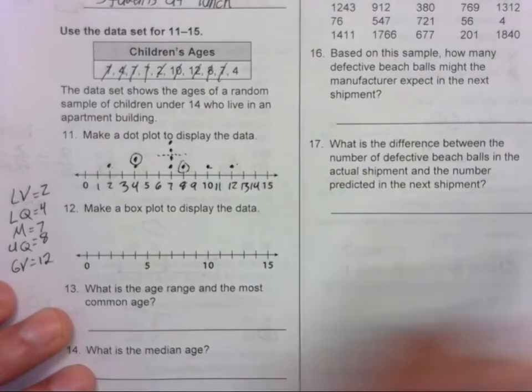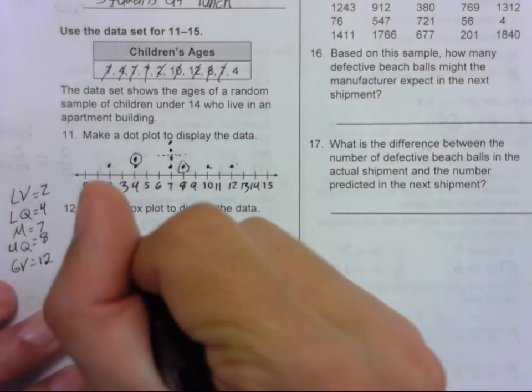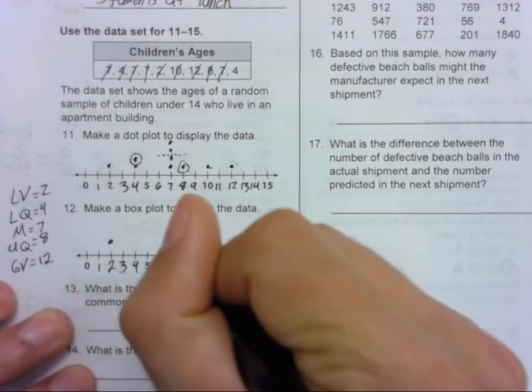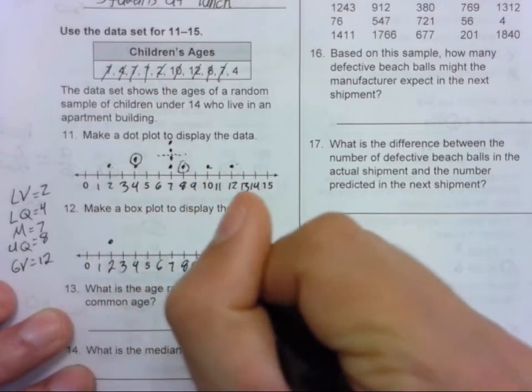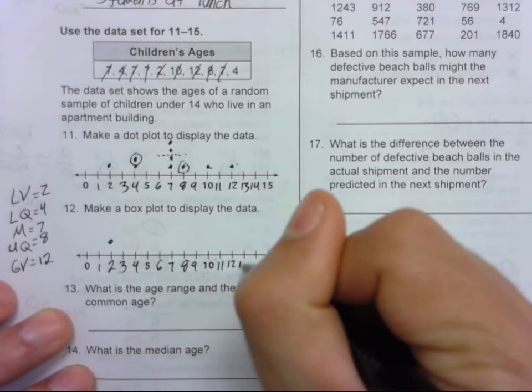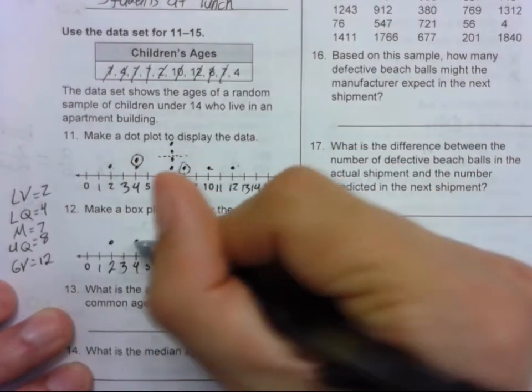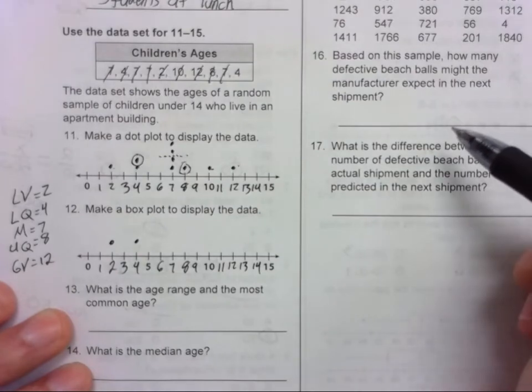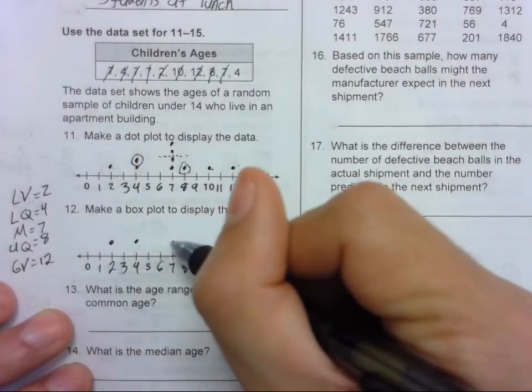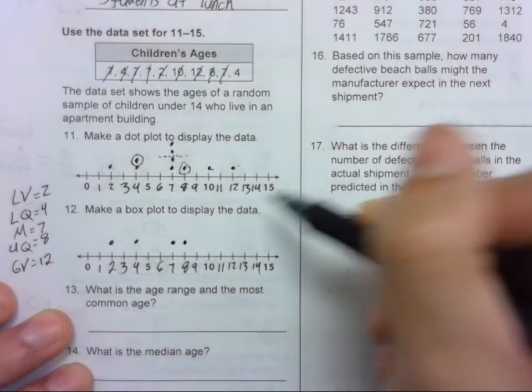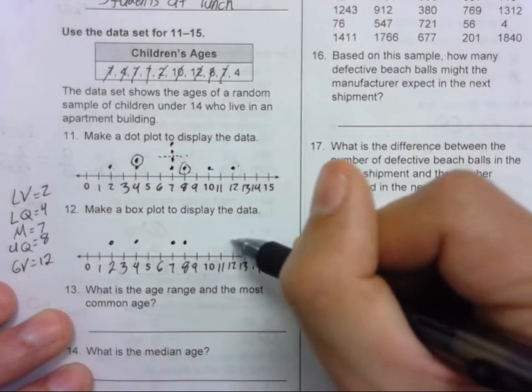So now we plot these points. Lowest value is 2. Lower quartile is 4. Median is 7. Upper quartile is 8. And greatest value is 12.